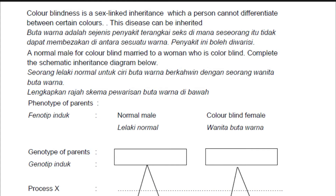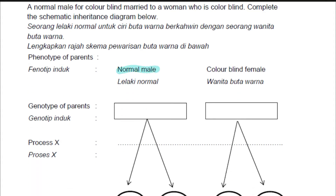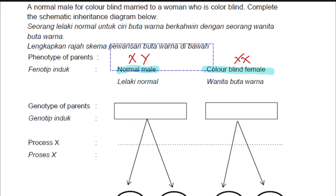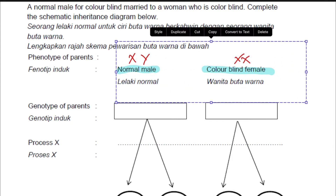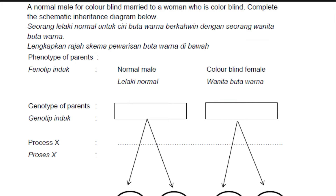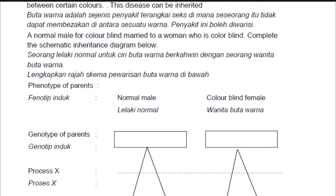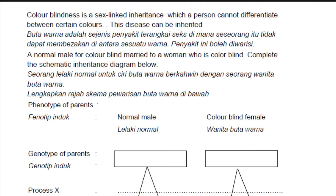So now let's do an example question. Quite a number of you don't know when a question is asking about sex-linked inheritance. Most of you, when you see male or female mentioned, straight away conclude it's a sex-linked question and write X, Y, X, X. But remember, not all genes are carried by the sex chromosome. In our syllabus, there are only two types of sex-linked inheritance we learn: colorblindness and hemophilia.